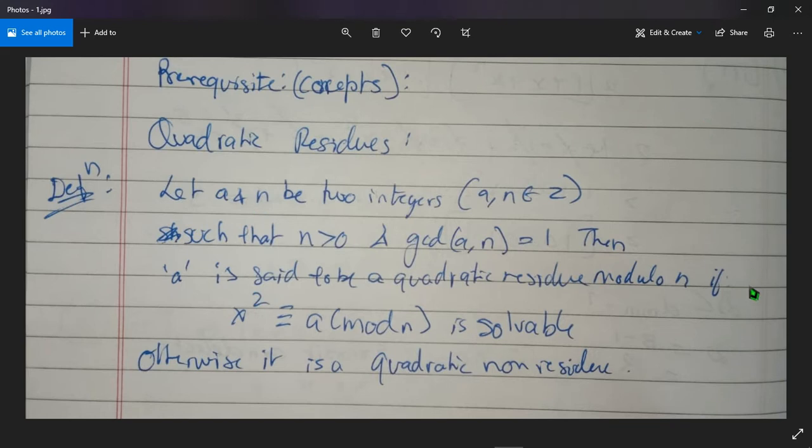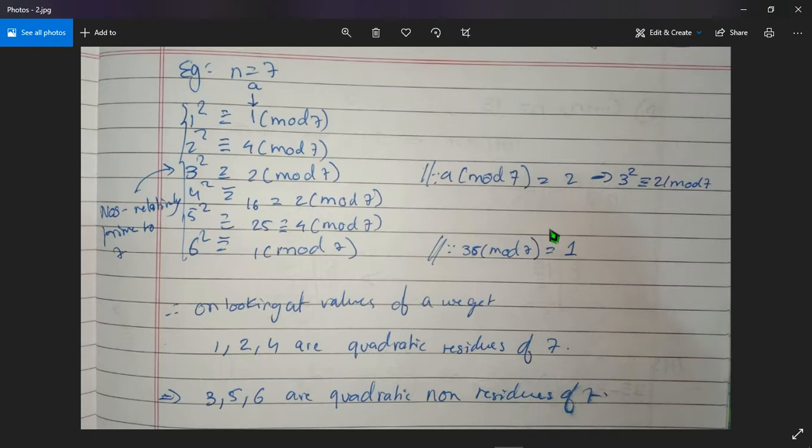So this is our definition of quadratic residue, but to be able to understand this more and in a better manner, what we will do is go and take an example. So this is an example where n that we are taking is 7.